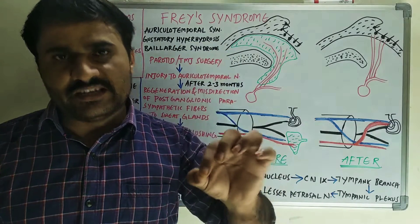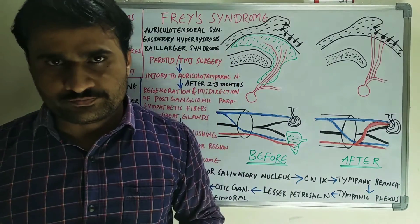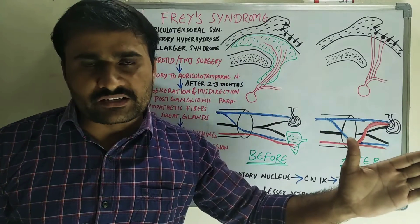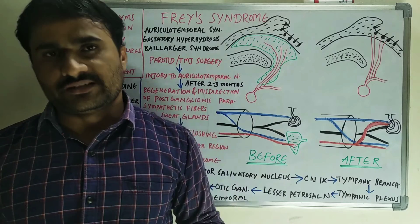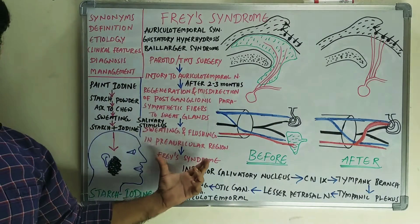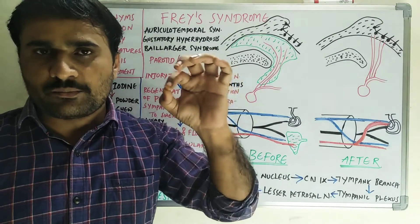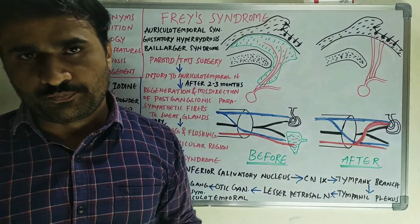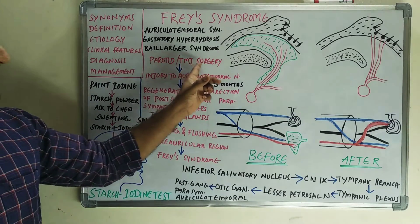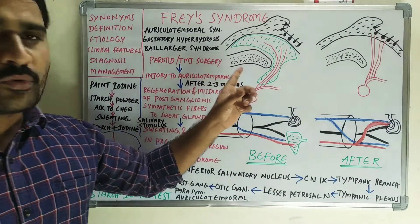The etiology — the most important single etiological factor is injury to the auriculotemporal nerve. This may be due to parotid surgery (parotidectomy) or TMJ surgery. Due to the parotid or TMJ surgery, there is injury to the auriculotemporal nerve.